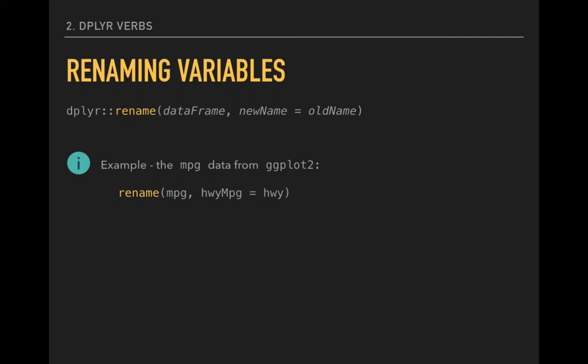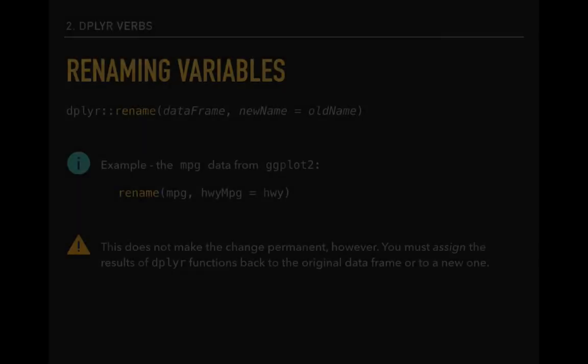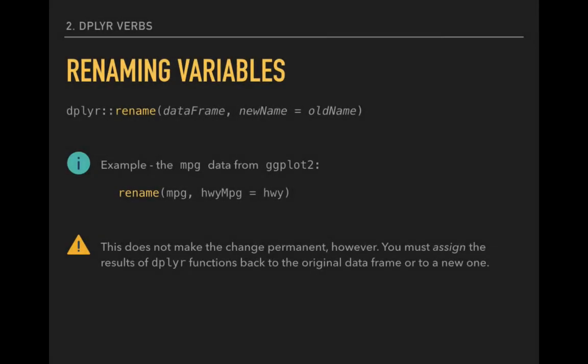So for example, we could edit the fuel efficiency data so that the variable for highway fuel efficiency, spelled H-W-Y, is renamed to include the letters MPG. One cautionary note is that this is only one part of what we need to do. Not only do we need to instruct R to make the change, but we need to direct R to assign these changes to a data frame.